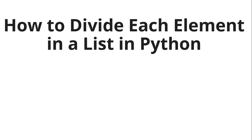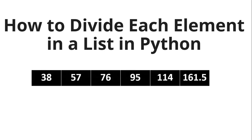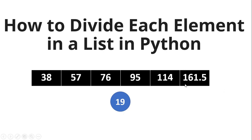Today we will be learning how to divide each element in a list in Python. Let's understand the question with the help of an example. The given list has the elements 38, 57, 76, 9, 514, and 161.5. The given value or divisor with which you have to divide all these numbers is 19, which means you have to divide each number in the list with the number 19.